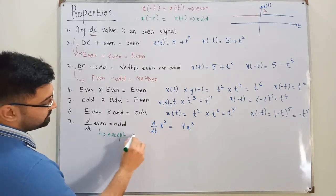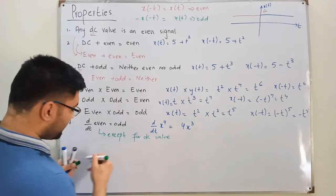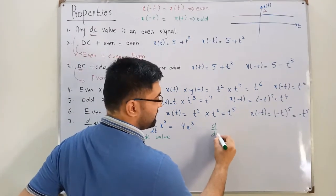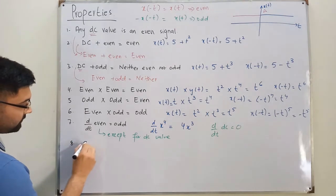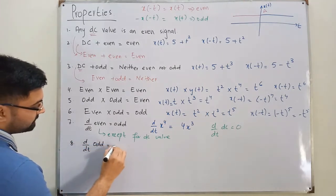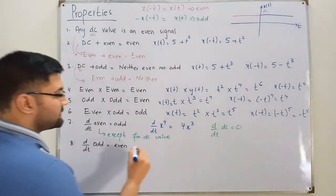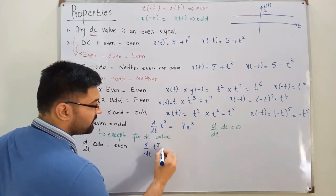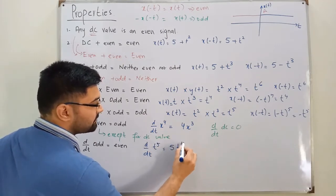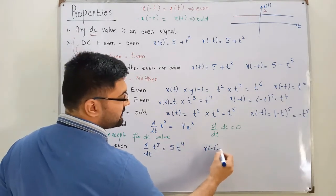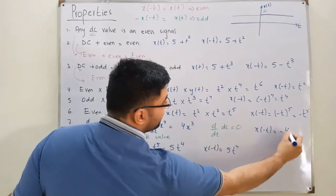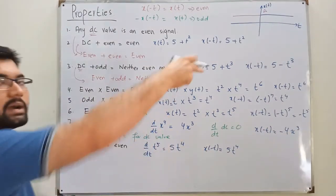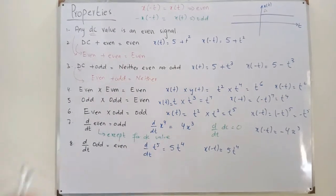The derivative of a DC is zero, which is a special exception. The eighth property: the derivative of an odd signal is even. For example, the derivative of t⁵ equals 5t⁴. If you have X(-t), it equals 5t⁴ again, since negative one to an even power is positive — so this is an even signal.